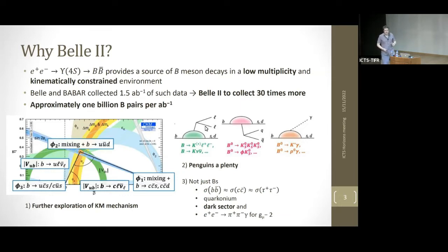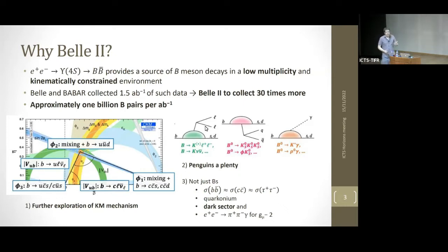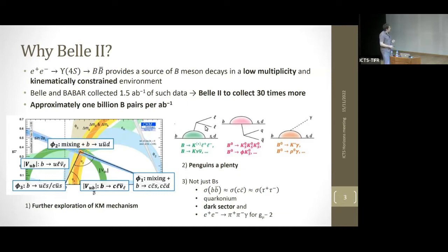Belle II is built on a legacy — there were two predecessors, Belle and BaBar, which collected one and a half inverse attobarns of data. The goal of Belle II is to expand that dataset by a factor of 30, reaching up towards 50 inverse attobarns. Just to set the scale, because I'll compare to LHCb shortly: one inverse attobarn is around 1 billion BB̄ pairs.